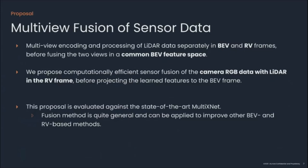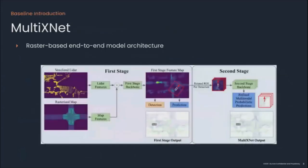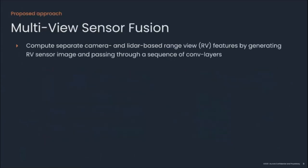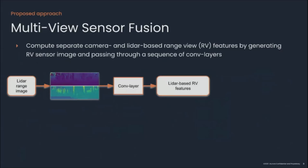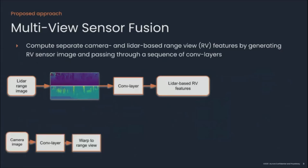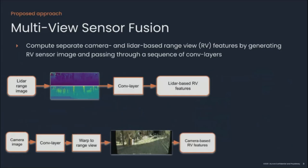That brings us to our proposal. In this work, we realize the strengths and weaknesses of these representations and propose an efficient and generic fusion method that aggregates benefits from all the views. We choose to evaluate our proposed method on the state-of-the-art MultiXNet. First, let me introduce our baseline, MultiXNet. This network takes LIDAR data in BEV representation and a rasterized map as input, and fuses them to generate detection and corresponding predictions. Now, for our fusion method: Range View representation of LIDAR data is processed through a set of convolution layers. In parallel, we process a 2D camera image with a set of convolution layers and warp these features to Range View, similar to the LIDAR Range View. These two feature maps are then concatenated together, passed through another set of shallow convolution layers, and finally projected to BEV.